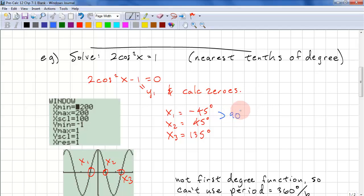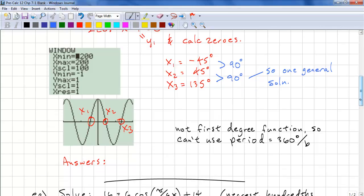You should always do the difference between the solutions. They're 90 degrees. This means we have one general solution because the spacing is the same.